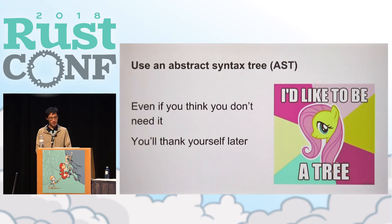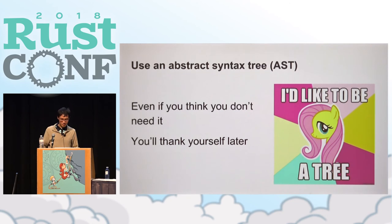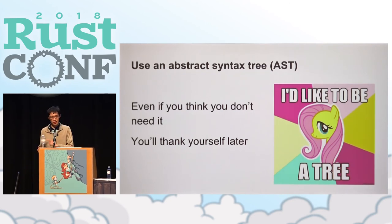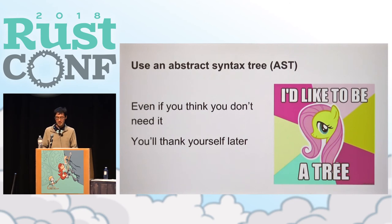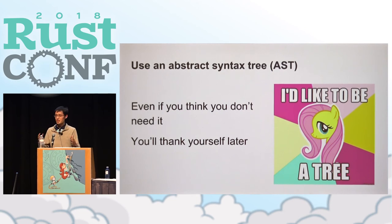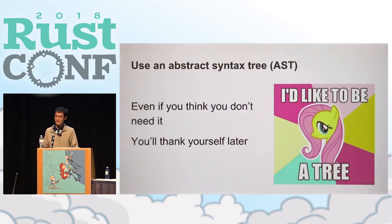Early versions of Maud didn't do this — I thought it was really cool at first because everything is done in a single pass. But the moment I tried to do any sort of analysis or optimization, everything fell down and I ended up rewriting it to use an AST anyway. So even if you don't think you need it now, please use some sort of syntax tree because you'll thank yourself later.